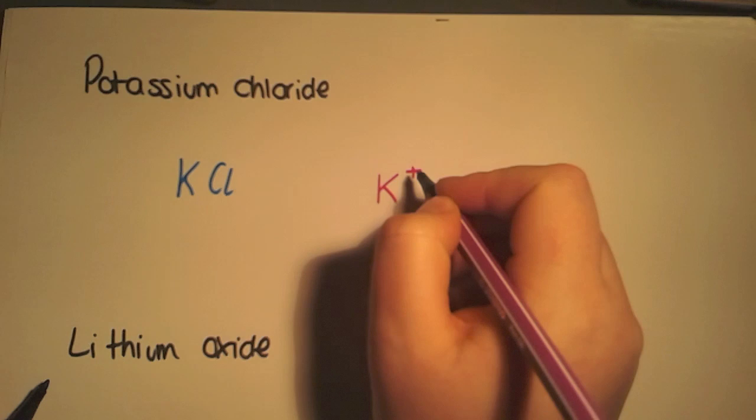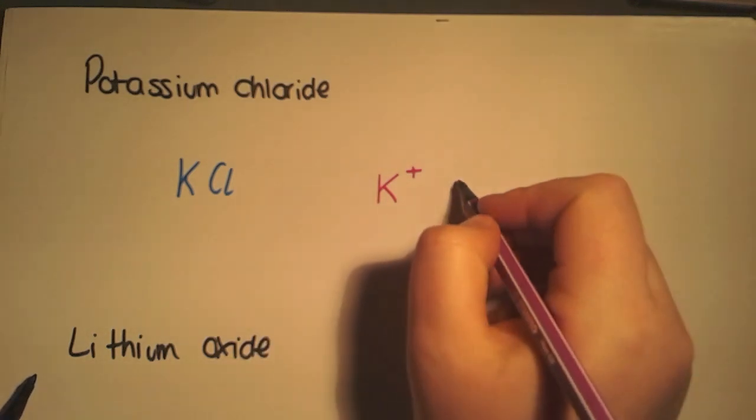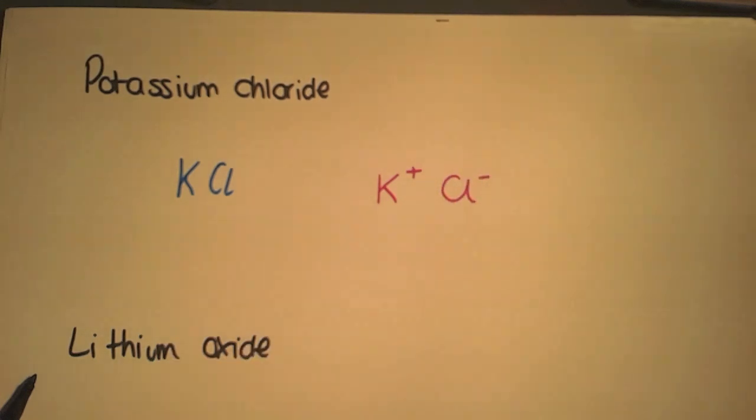Whereas chlorine has a valency of one and is a non-metal, so will be Cl-. We move on to have a look at lithium oxide.